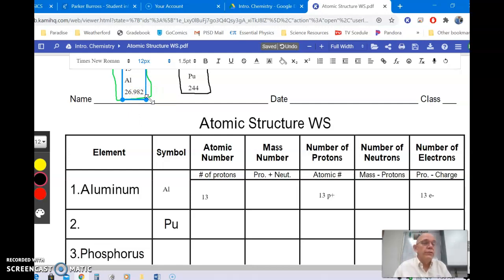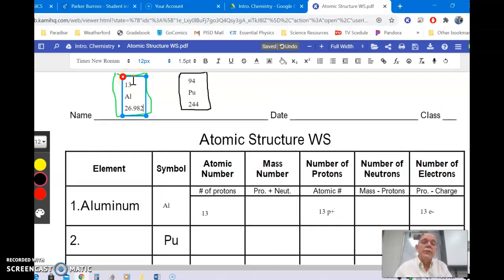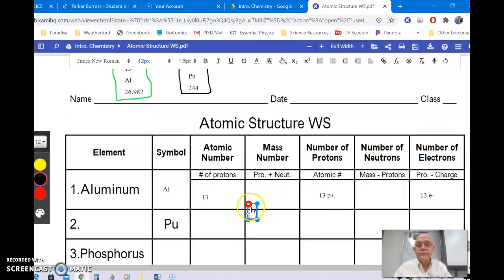Of all aluminum atoms, they're going to have 13 protons, that's what makes it aluminum, but it may have different numbers of neutrons. And so this is the average, if you took all the different weights of the different atoms, you get this average.